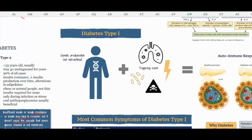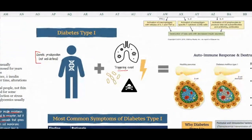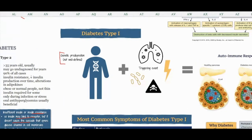Let's talk about what causes diabetes type 1. This is not very well defined. People have some kind of genetic predisposition towards diabetes type 1, and then usually what happens is there's some kind of triggering event. More often than not, it's some kind of infection that results in the production of antibodies, and those antibodies eventually turn on your beta cells. But that won't happen unless you have some kind of genetic predisposition towards diabetes type 1.